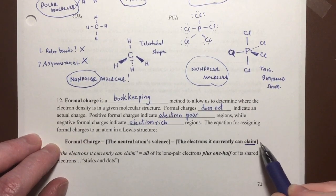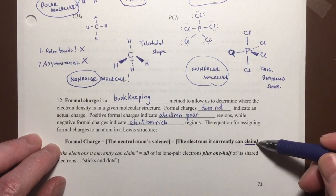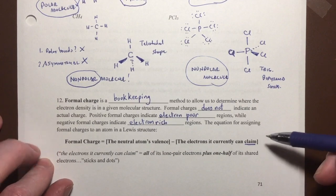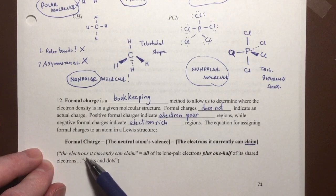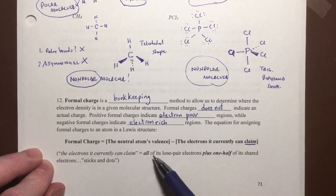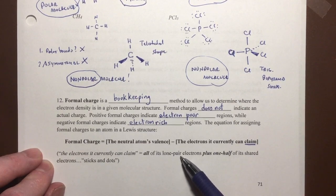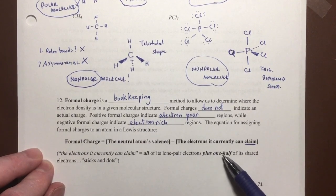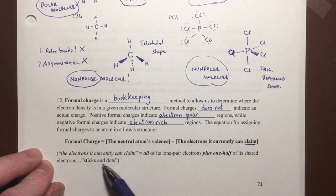The way I'm describing it is the electrons the atom can currently claim — and I'm going to underline the word 'claim' — because we're going to imagine that if the atom had to leave that molecule, how many electrons could it take with it? If the electrons are lone pairs and not being shared, it can claim all of those, plus one half of the ones that it is sharing. So this is also called sticks and dots.